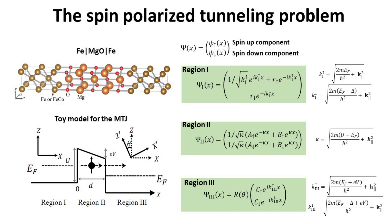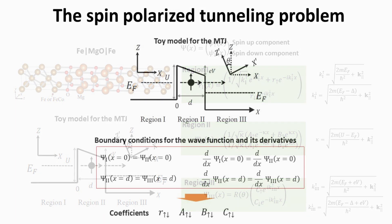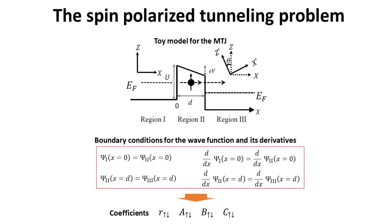To determine the wave function amplitudes, we apply boundary conditions to connect the solutions at the interfaces. These boundary conditions ensure continuity of the wave functions of spin-up and spin-down states at both interfaces, as well as continuity of their derivatives at both interfaces. By employing such conditions, all coefficients can be obtained. In particular, we are interested in the coefficients c_up and c_down, which are the transmission amplitudes for both spin channels.